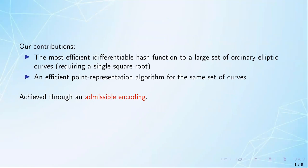This work represents a big leap for hashing into ordinary elliptic curves, as it results in the first known constant-time indifferentiable hash function to a large set of curves that requires a single square root computation. It also provides an efficient point representation algorithm, which is essentially the inverse of this hash, and both of these constitute what we call an admissible encoding.